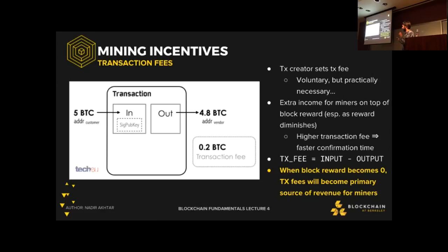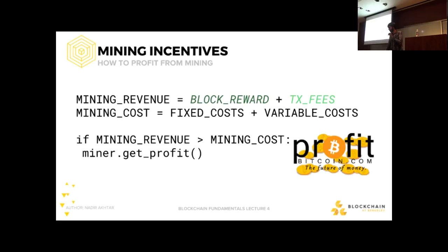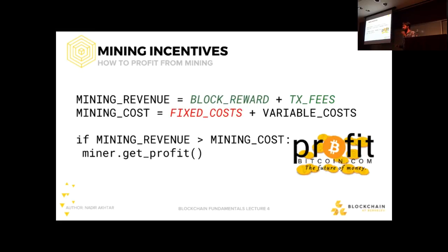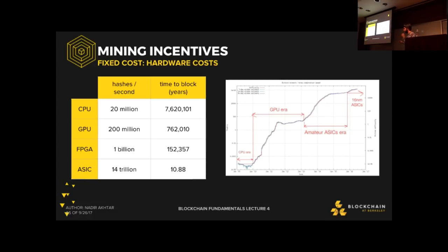Once block rewards become zero, transaction fees will be the only revenue for miners, which might reach hundreds or thousands of dollars — but that's a discussion for a hundred years from now. Fixed mining costs mostly involve hardware. There are various hardware types: CPUs, GPUs, FPGAs, and ASICs. In the first year there was a lot of CPU mining, which moved to GPU mining, which moved almost directly to ASICs, almost skipping FPGAs. A CPU would need to run about 7.6 million years before finding a single block, so it's essentially unfeasible.